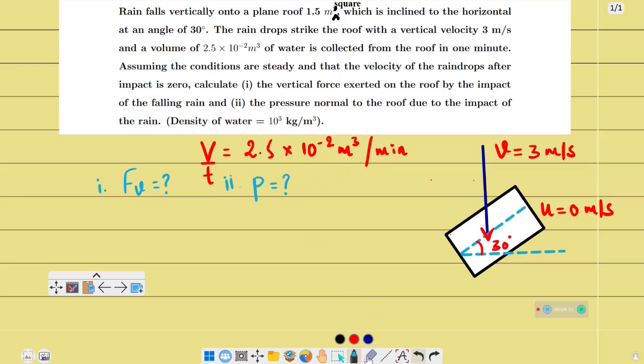For the vertical force, we write F_v. The vertical force exerted on this plane roof. The force formula is mass times acceleration. Mass is the mass of the raindrop, and acceleration is (v minus u) divided by t.